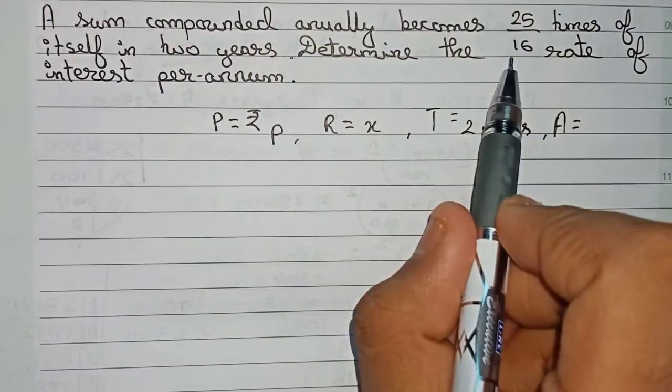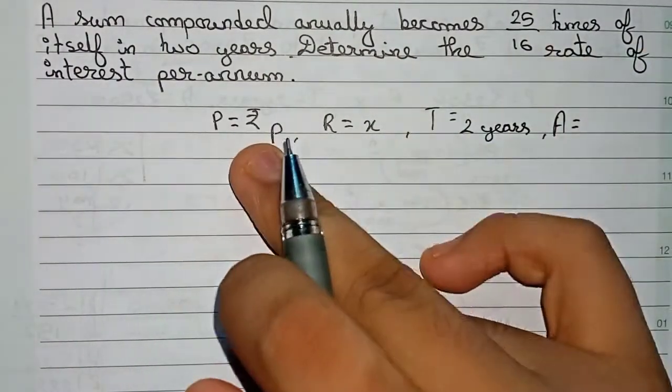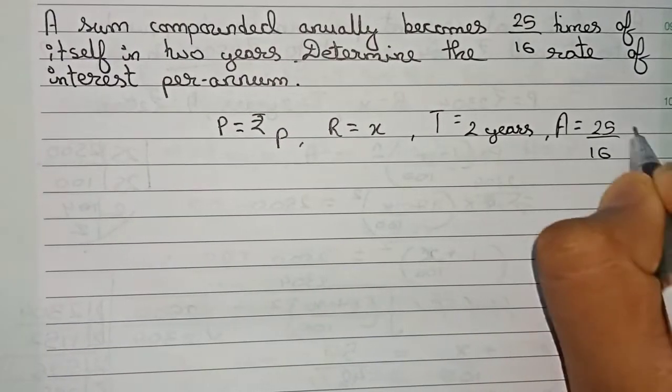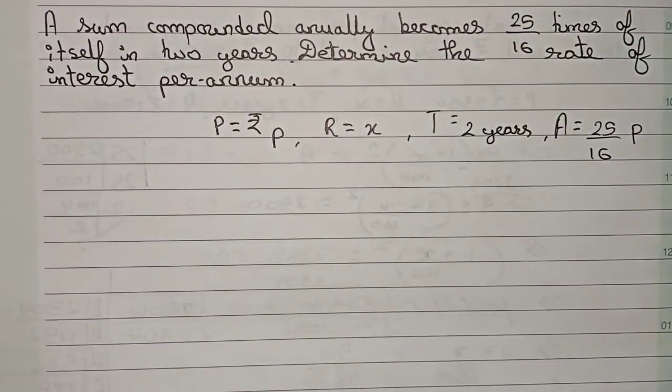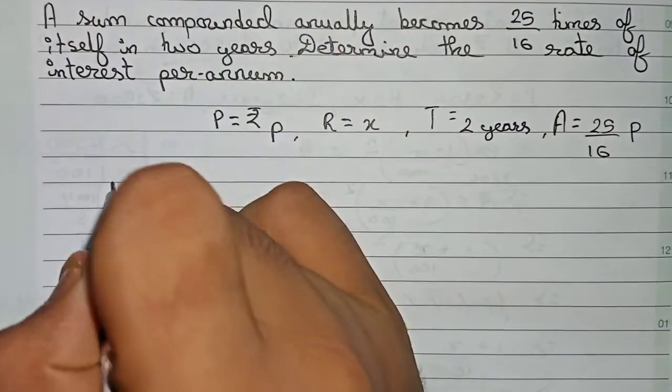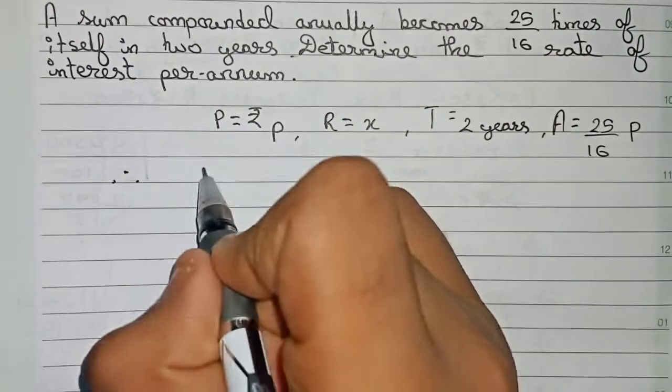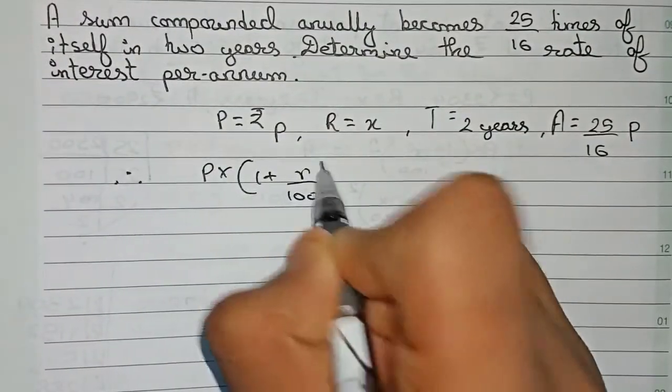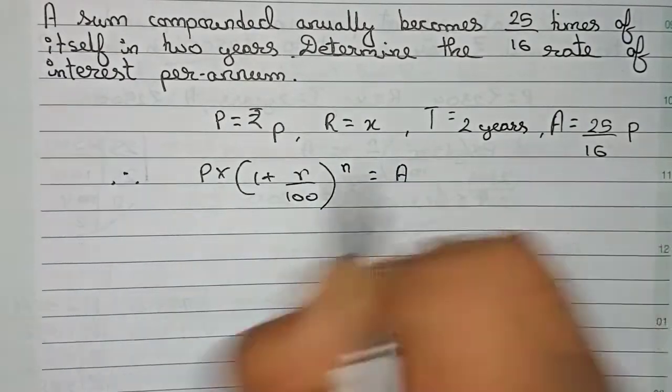Also, the amount is given. The amount will be equal to 25 by 16 times of itself, that means 25 by 16 times of the principal, so it will become 25 by 16 P. Therefore we write the formula: principal into (1 plus rate by 100) to the power n equals the amount.